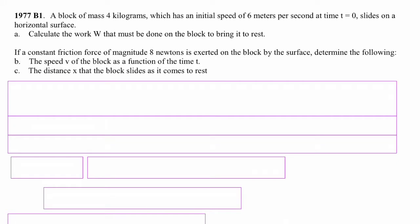A block of mass 4 kilograms, which has an initial speed of 6 meters per second at time t equals 0, slides on a horizontal surface. Part A: Calculate the work W that must be done on the block to bring it to rest.